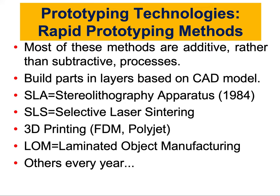All these technologies are based on a CAD model. You build your CAD model first — a computer-aided design model — and then you utilize these technologies. You have the SLA, which is stereolithography, and the SLS, selective laser sintering, and the traditional 3D printing, and laminated object manufacturing. We are not going to discuss and explain those in detail in this video, but you can refer to them and check online, and we might talk about them in later videos.